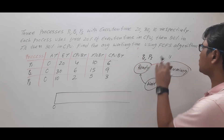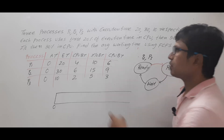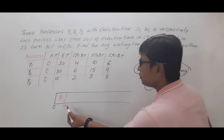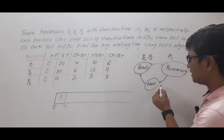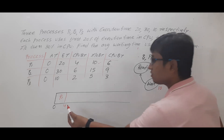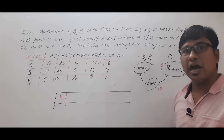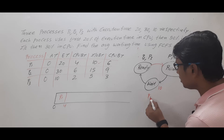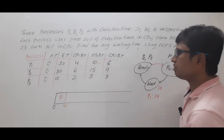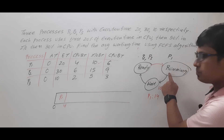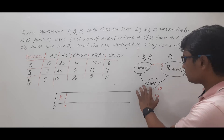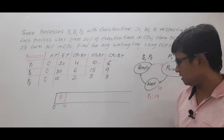Process P1 needs 4 units of CPU time, so it will be given 4 units. Then at 4 units of time, it will be sent to the wait state because it needs 10 units of IO time. So at 4 units it enters the wait state; 4 plus 10 means at 14 units of time, process P1 will come back to the ready state.